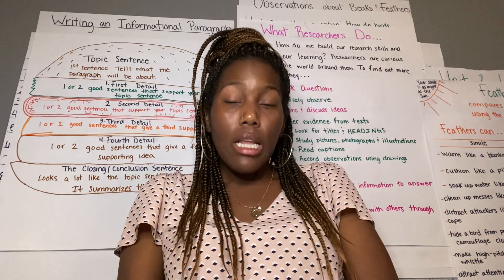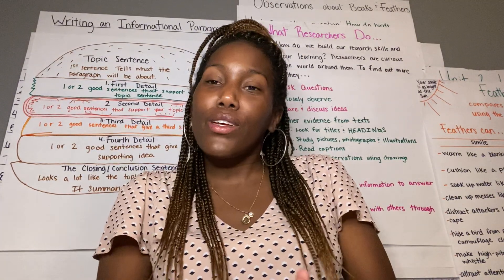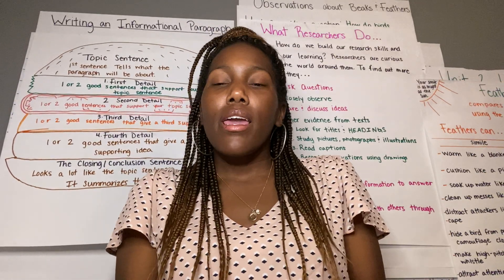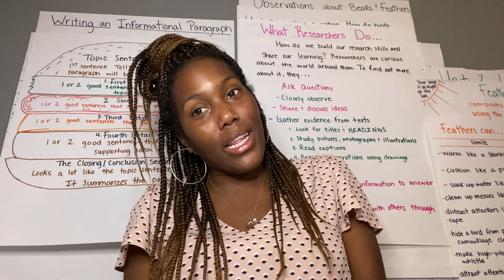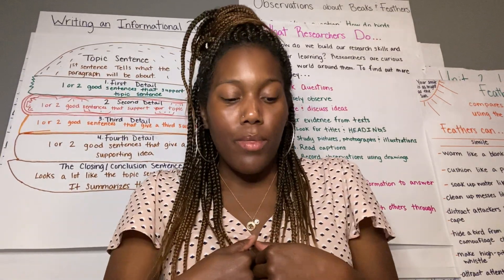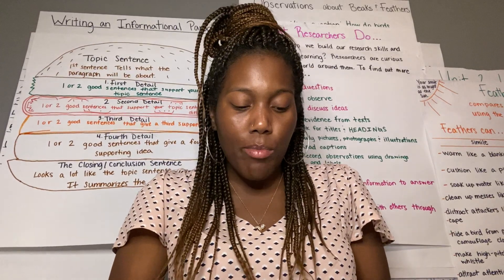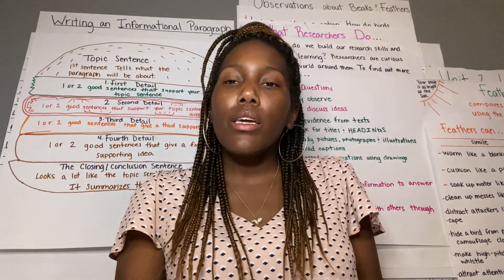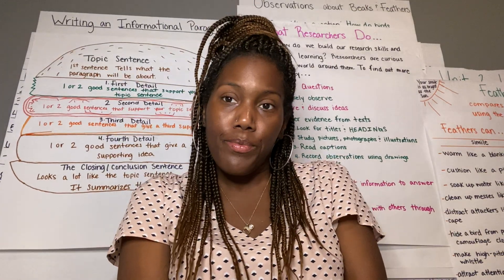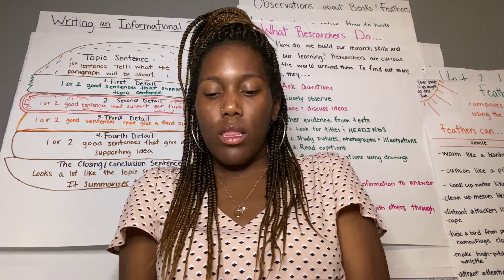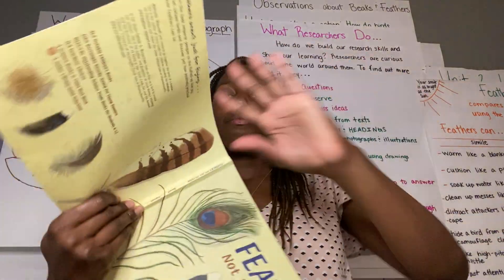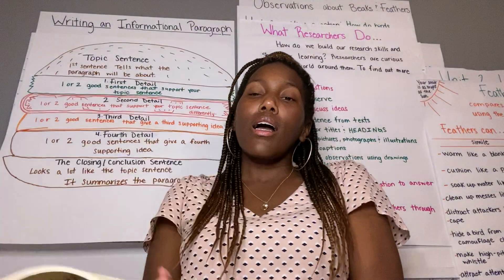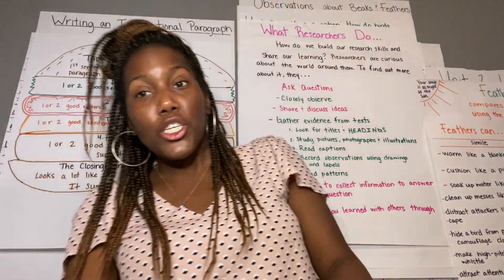Now we're also today going to do a little bit more research on, you guessed it, feathers. Yesterday we drew a semi-plumed feather and I've seen some great drawings — I know mine wasn't the greatest, but I know you guys can do better than me. So today, our second learning target is: I can explain the purpose of a contour feather using pictures and words. What does a contour feather do? Let's flip through the page in our book that tells us about feathers. Here is a picture of a contour feather. Contour feathers help keep the bird's shape and color.